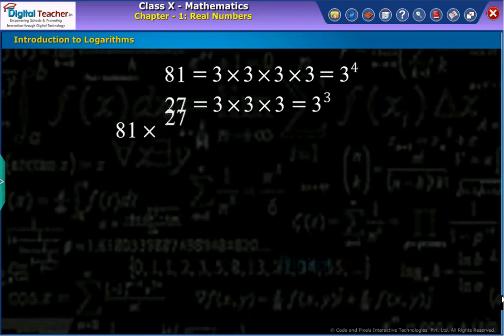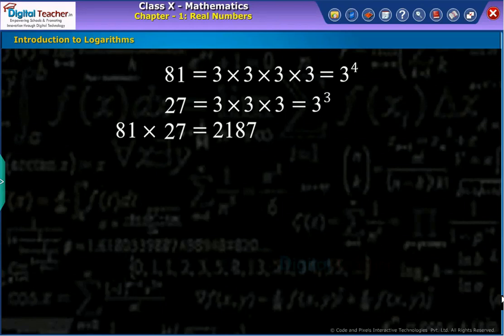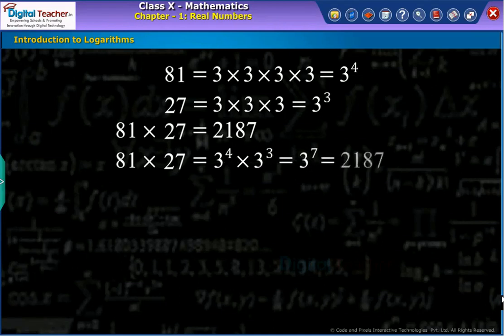Suppose we want to multiply 27 with 81. One way is to multiply both the numbers directly. The other way is to use the rules of exponents. The product of 27 and 81 can be written as 3 power 7 according to the laws of exponents as shown on screen.